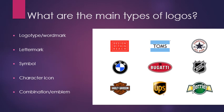The last type is a combination mark or emblem, where words and images are always seen together and cannot be separated. With symbol marks, the visual and the text are designed as separate pieces that can be removed independently. With combination marks, the visual and the words work together to create the larger logo and the larger message — it wouldn't make sense to take the picture away from the words or vice versa.